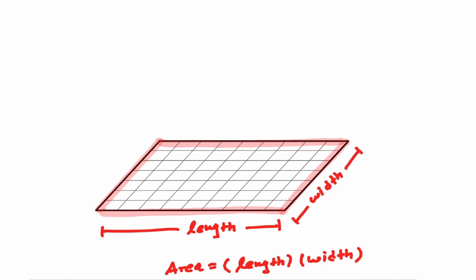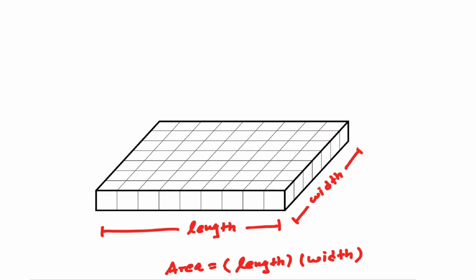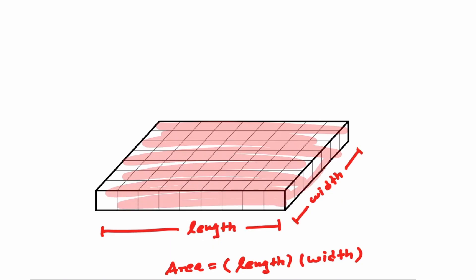Now let's think about what would happen if we place another square on top of the one that we have drawn here. By placing a square right on top of the one that we started with, we have created a three-dimensional figure, and now we can start thinking about how we can define the volume of this figure.